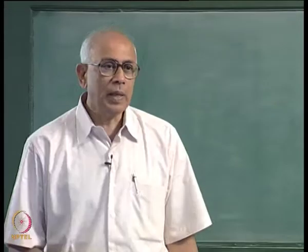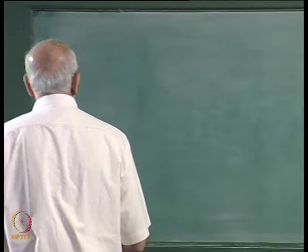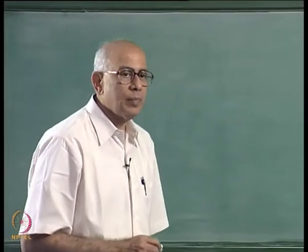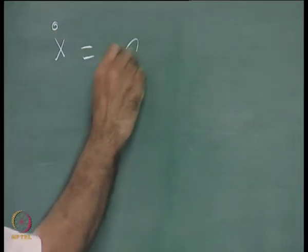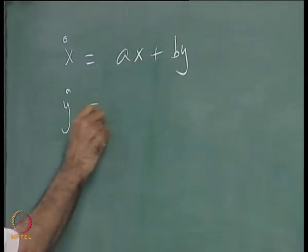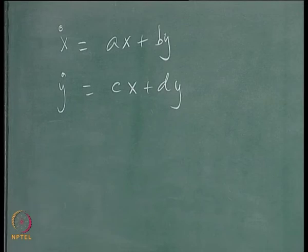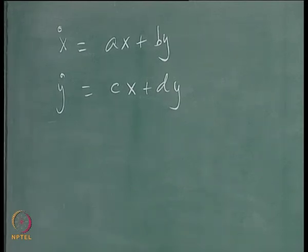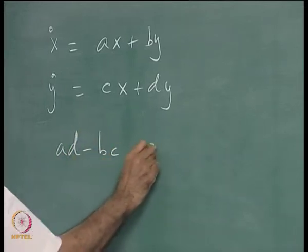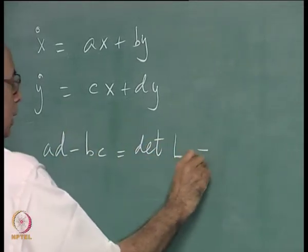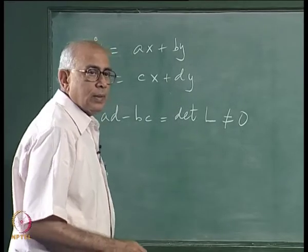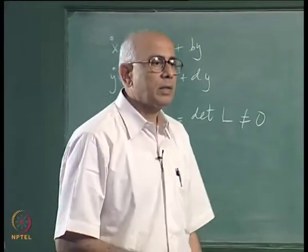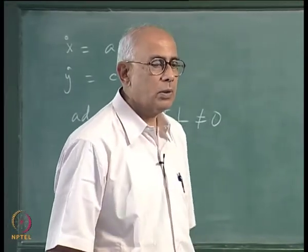We resume our study of dynamics in the phase plane. We were going to analyze the behavior of a two-dimensional dynamical system near a critical point, which we have taken to be the origin. The set of equations we are interested in is a linear set of the form x-dot = ax + by and y-dot = cx + dy, where a, b, c, d are real constants. The general solution in this neighborhood can be written as linear combinations of exponentials of the two eigenvalues of the linear matrix L.